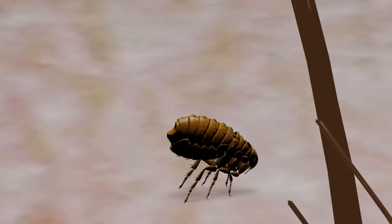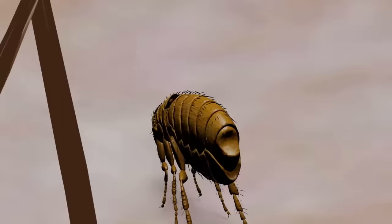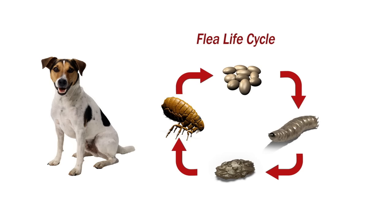Let's begin by discussing some of the many issues associated with fleas. Fleas are small, dark-colored, agile insects with tube-like mouth parts adapted to feeding on the blood of their hosts. This, combined with their very quick reproductive cycle, makes them a difficult challenge to eliminate from the pet and the environment.